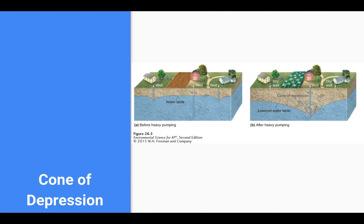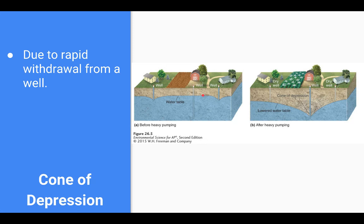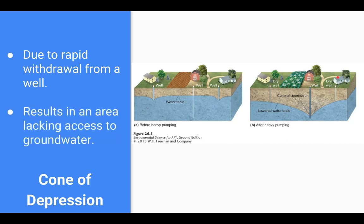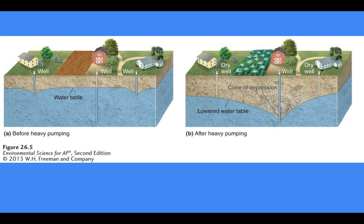What happened in Las Vegas leads us to the cone of depression — depression just means down. When you have rapid withdrawal of water from a well, it's like a straw. Here we have three different wells taking out water at similar rates, so the water table flows toward each well and everything is fine. But when one person decides to heavily pump for crops, the cone of depression lowers, and the neighboring wells on the left and right end up dry — the well with the heaviest pumping leaves no water for the others.